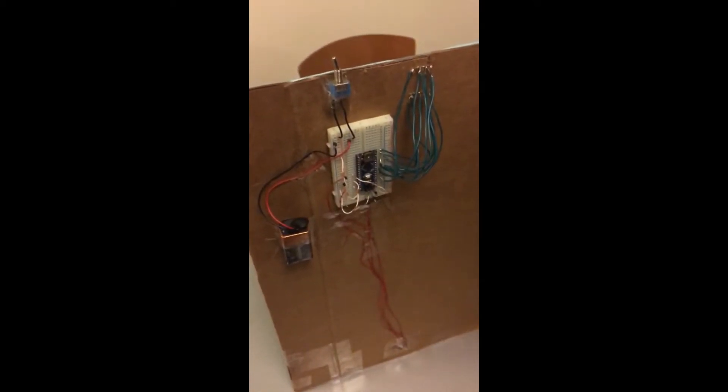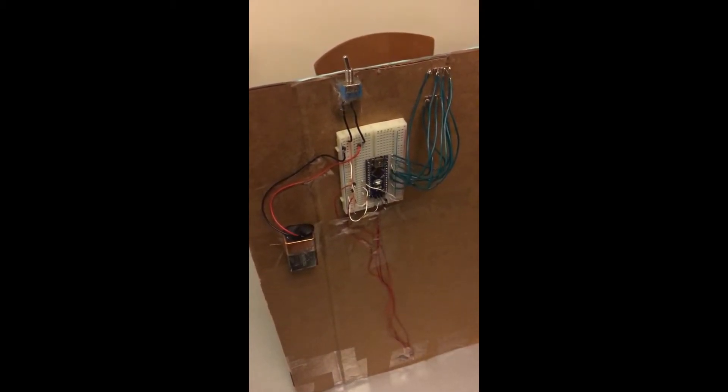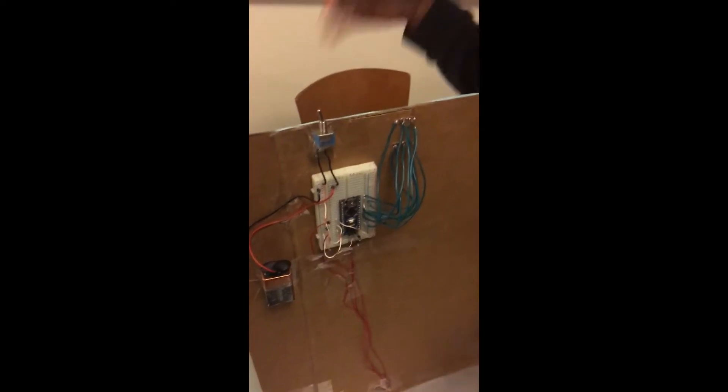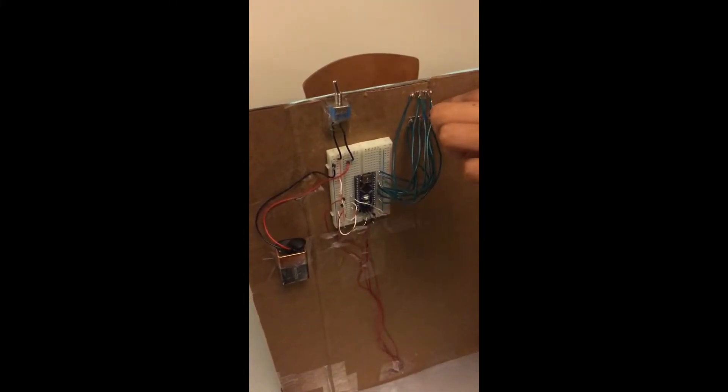As you can see here, these are the wires that are connected to the emitters and the receivers. They are also connected to the Arduino which monitors the voltage drop and then displays the score on the 7 segment display over here.